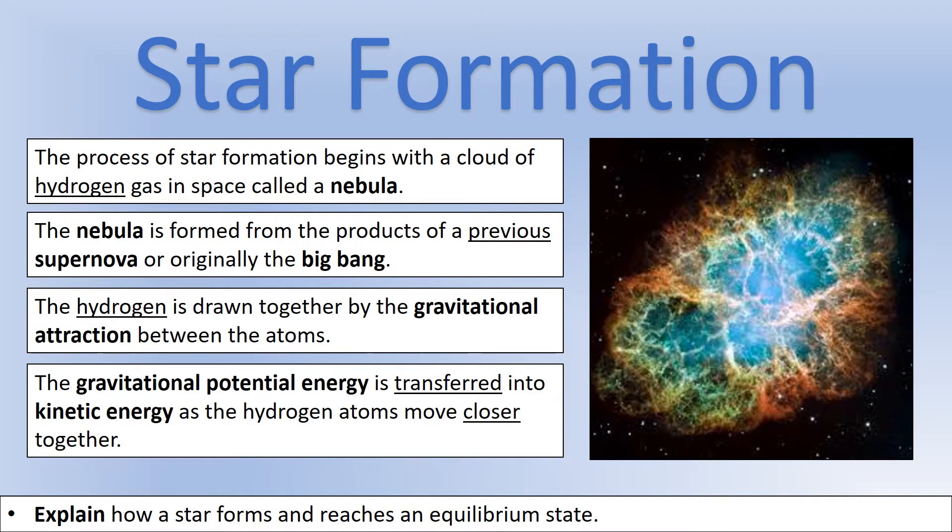The star starts with a cloud of gas in space called a nebula and it's mostly hydrogen gas. This ball of gas will have come from a previous supernova when a previous star died or it may have existed since the Big Bang. The key is that hydrogen has mass, therefore hydrogen atoms are attracted to each other through the gravitational interaction. As they move closer together, gravitational potential energy is transferred into kinetic energy.